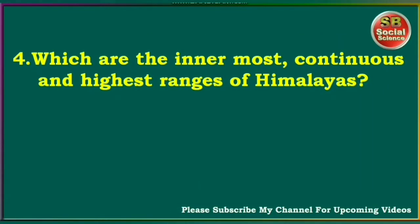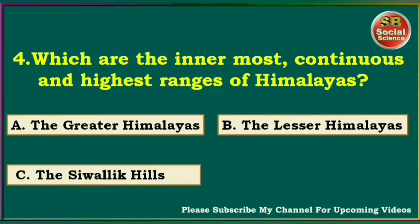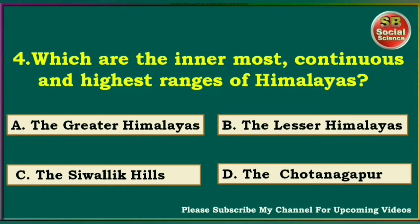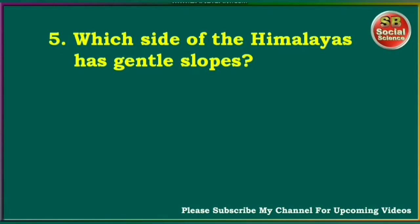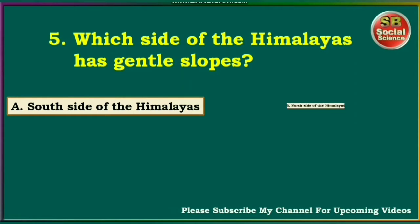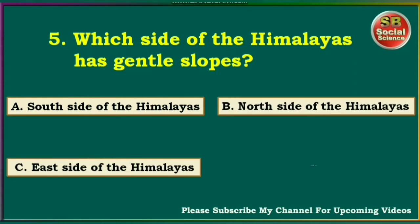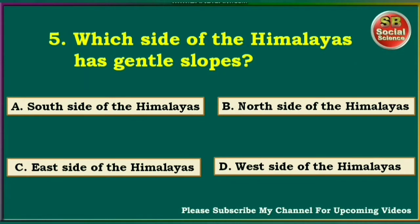Which are the innermost, continuous and highest ranges of Himalayas? The Greater Himalayas, the Lesser Himalayas, the Shivalik Hills, and the Chota Nagpur. The right answer is the Greater Himalayas. Which side of the Himalayas has gentle slopes? South side, North side, East side, West side. The right answer is North side of the Himalayas.